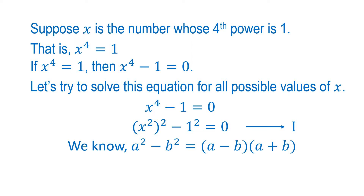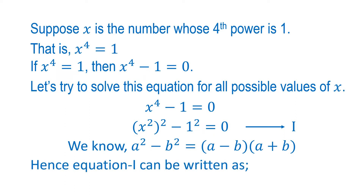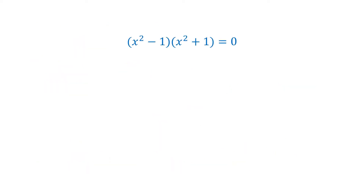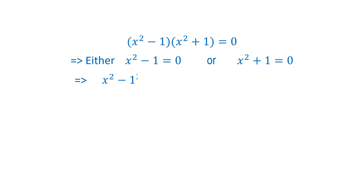We know a² − b² equals the product of two factors (a − b) and (a + b). Hence, equation number 1 can be written as the product of two factors (x² − 1) and (x² + 1) equals 0. This gives either x² − 1 = 0 or x² + 1 = 0.